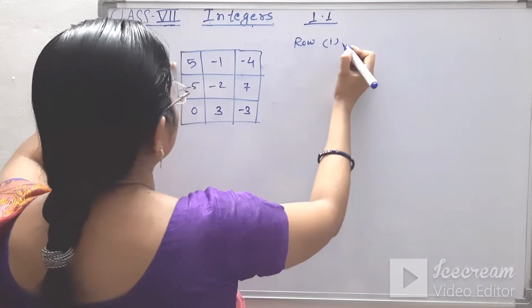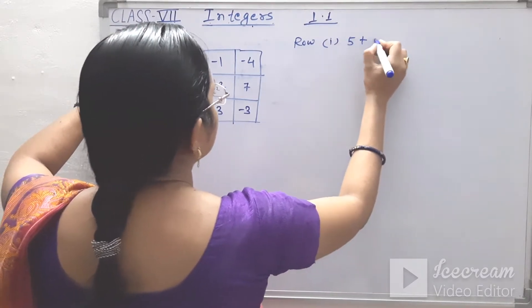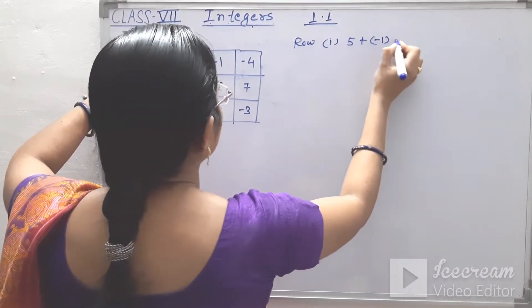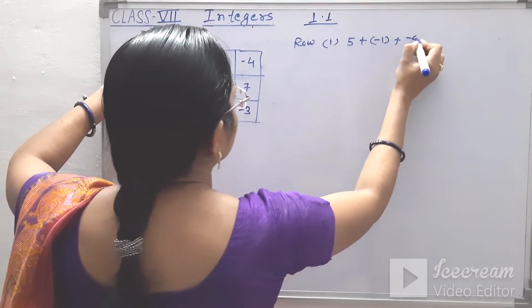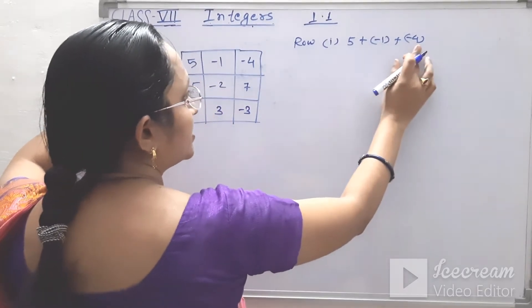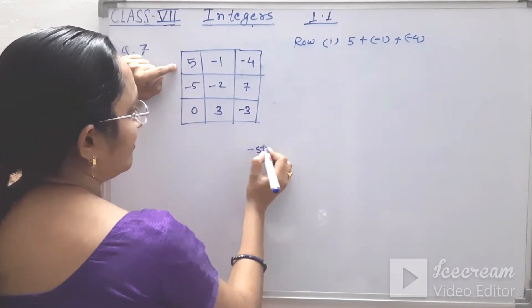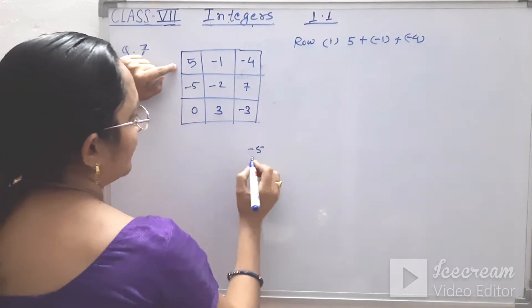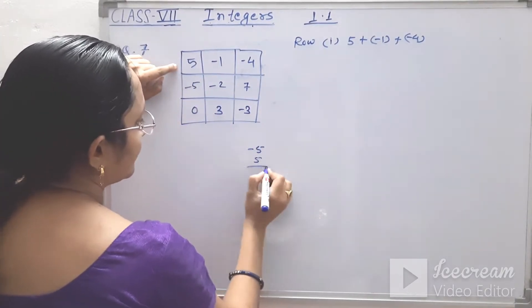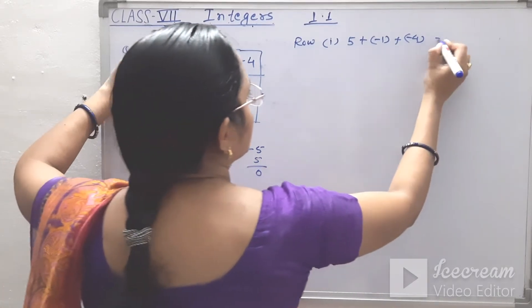In the first row, we see 5 plus minus 1 plus minus 4. Minus 1 and minus 4 sum is minus 5, and here is plus 5. Plus 5 and minus 5, the answer is 0.